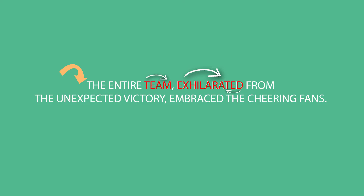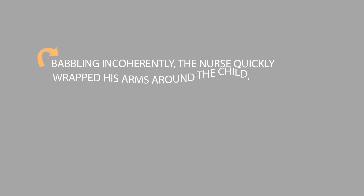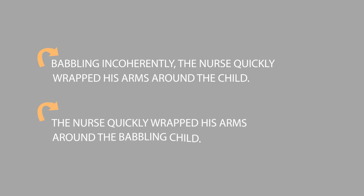So what's the big deal about a participle? Sometimes it's used in the wrong way, and that creates a dangling participle — also called a hanging participle or an unattached participle. Take a look at this sentence: Babbling incoherently, the nurse quickly wrapped his arms around the child. The way the sentence is written, it seems that the nurse was babbling incoherently. What the writer means is that the child was babbling incoherently. The sentence should be written perhaps this way: The nurse quickly wrapped his arms around the babbling child.